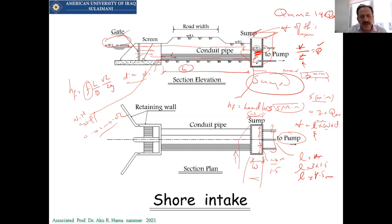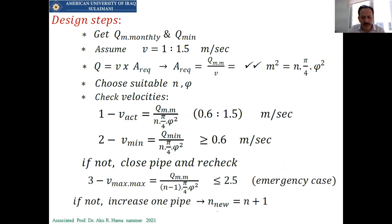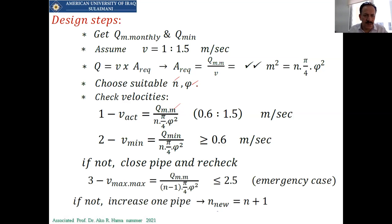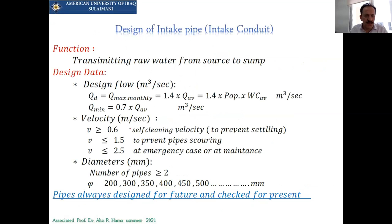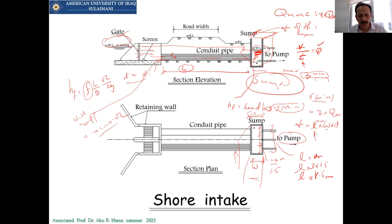That was the previous lecture review. Now we have to check for velocities. Since we are done with the volumes, we check the velocities through the intake pipes. We need to know the velocity through the pipes. If you find the suitable number of pumps and the pipe diameters, you should check the pipe velocities. The number of pipes should be n and the diameter selected from standard sizes.